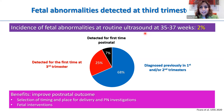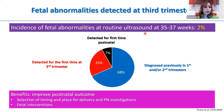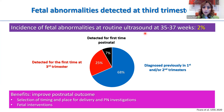What's the benefit of diagnosing fetal abnormalities at this gestation? There are multiple benefits that can improve postnatal outcomes — including selection of timing and place of delivery. Some abnormalities require delivery at a surgical or tertiary center because the baby needs immediate intervention. Sometimes fetal intervention can improve the outcome, such as for vein of Galen malformation or placing a shunt. And of course there is also the option of late termination of pregnancy.